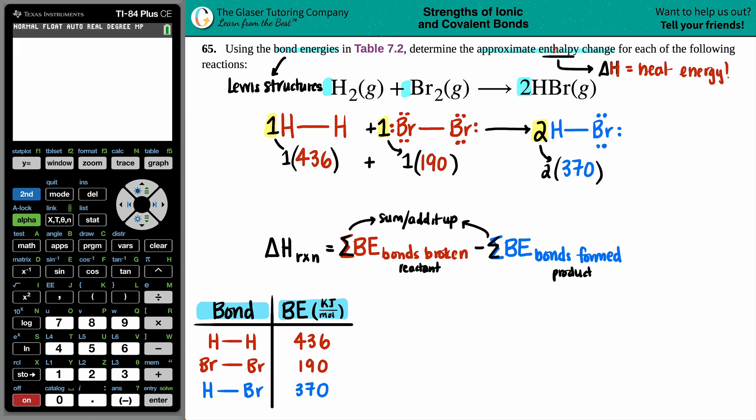So let's find out the numbers on the reactant side, 436 plus 190. What do we get? 626 total for this side. And then we got two times 370. 740. We have 626 and 740.